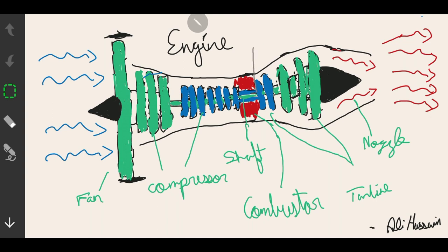Moving on to the turbine: high energy flow from the combustor enters the turbine, which rotates the turbine blades. Note that the turbine is connected to the shaft, so when the turbine blades rotate, they also rotate the blades in the compressor and inlet fan.